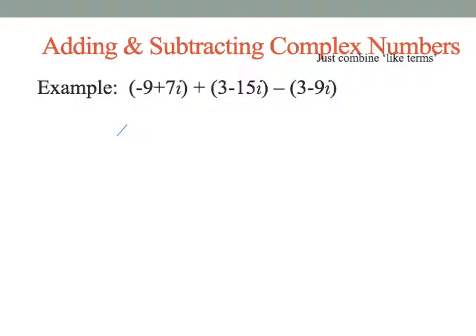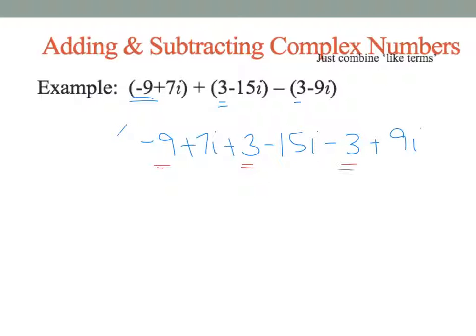Adding and subtracting complex numbers: add and subtract them by combining like terms. Write it without parentheses: negative 9 plus 7i plus 3 minus 15i minus 3 plus 9i. Add all real parts: negative 9 plus 3 minus 3 equals negative 9. Add all imaginary parts: 7i minus 15i plus 9i equals i. Final answer: negative 9 plus i, left in standard form.